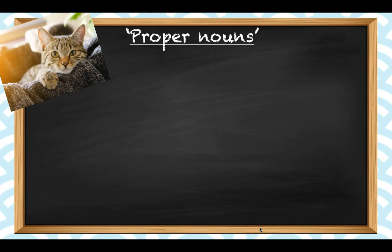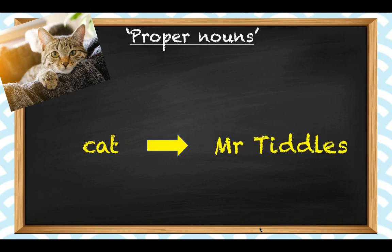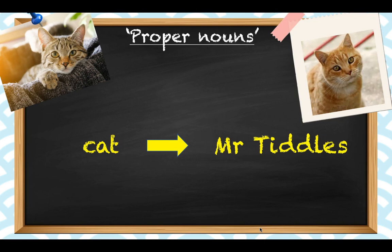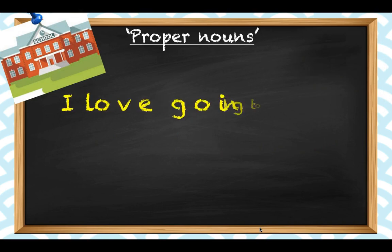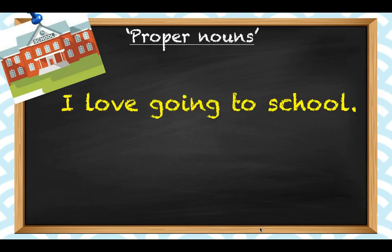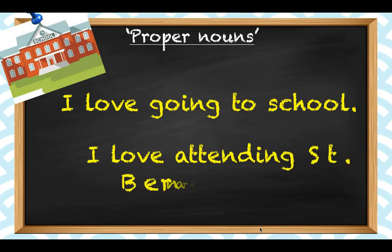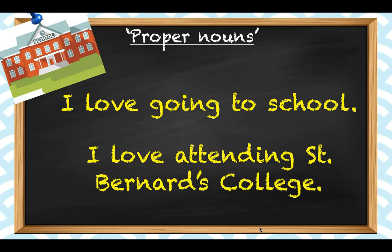When a noun is a proper noun, however, a capital letter is required. So when we move from just 'cat' — any old cat — to my cat, Mr. Tiddles, then it becomes a proper noun and is now specific to one particular cat, Mr. Tiddles. Similarly, with the sentence 'I love going to school,' there is no need for a capital letter, but if it becomes 'I love attending St. Bernard's College,' it is specific and it needs capital letters.